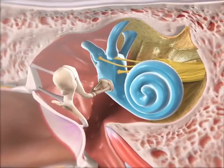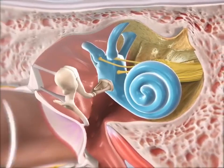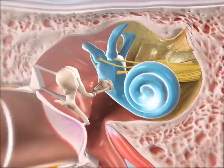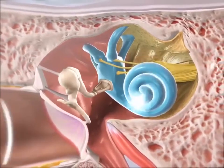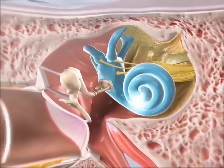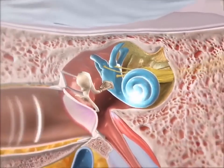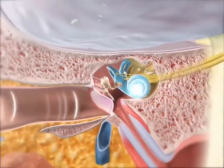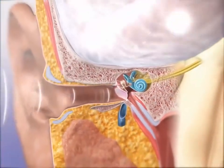The movement of these cells activates nervous system receptors. Signals are carried through the vestibulocochlear nerve, cranial nerve 8, to the temporal lobe of the brain, where they're interpreted as sound.